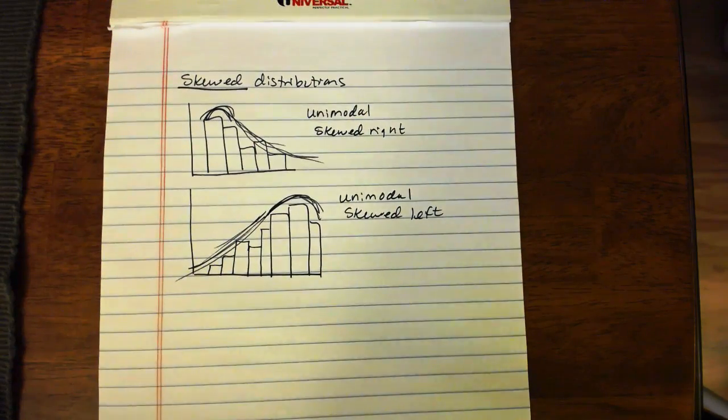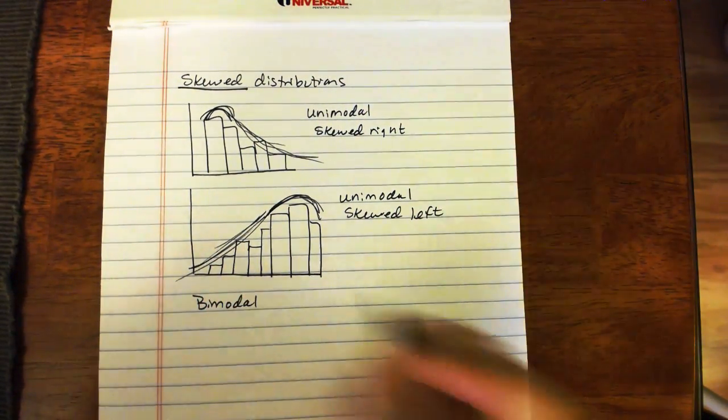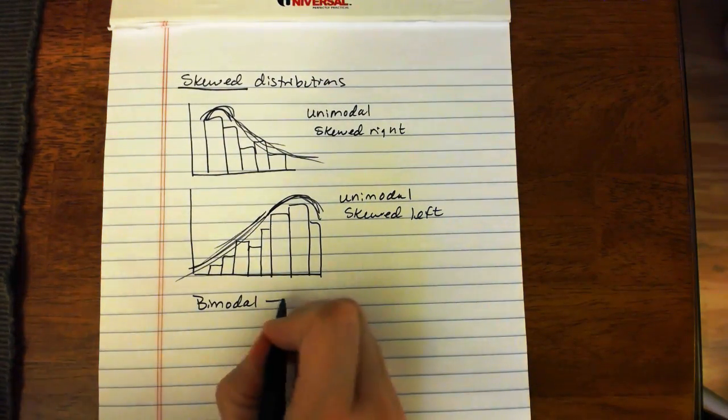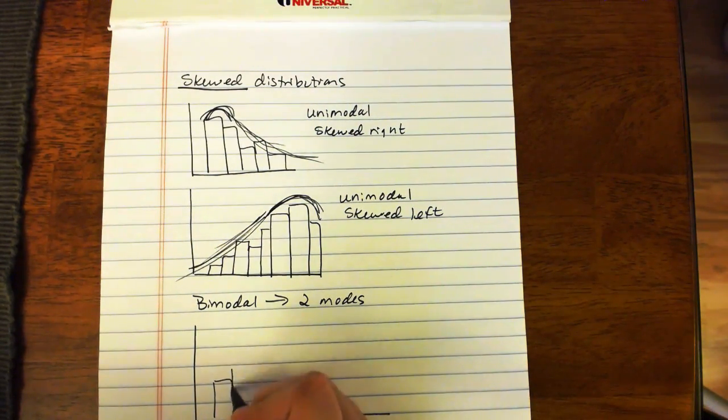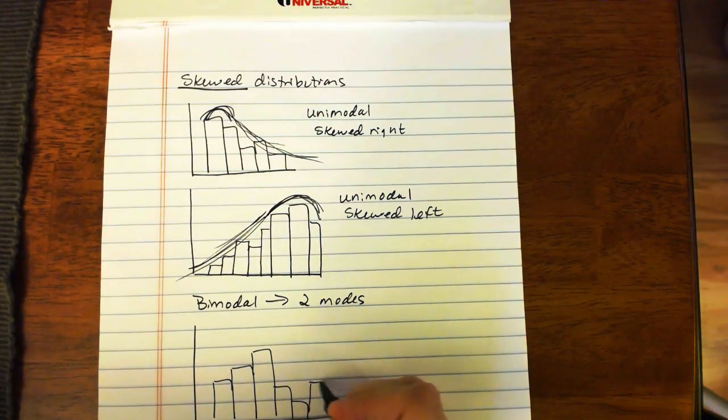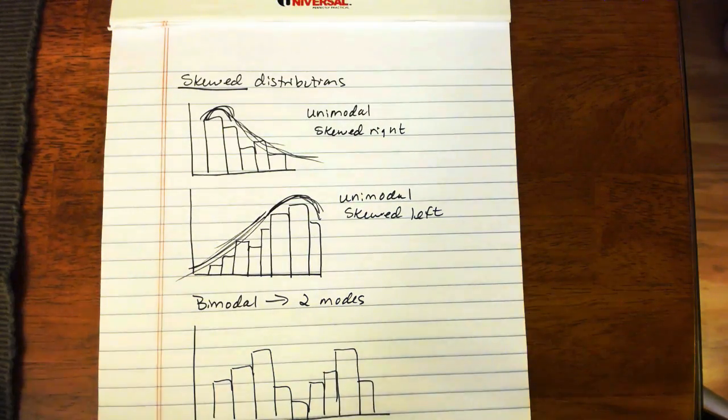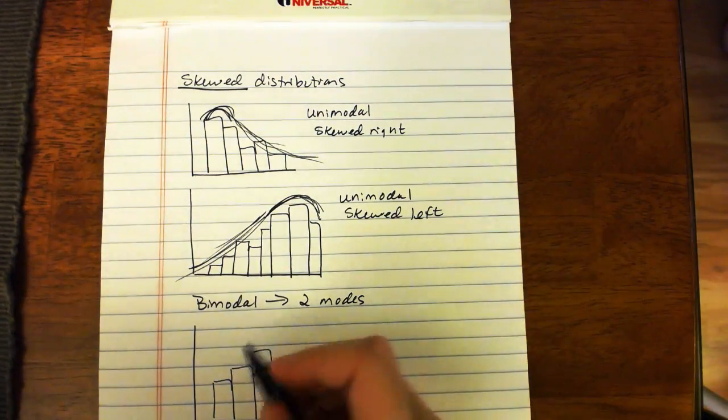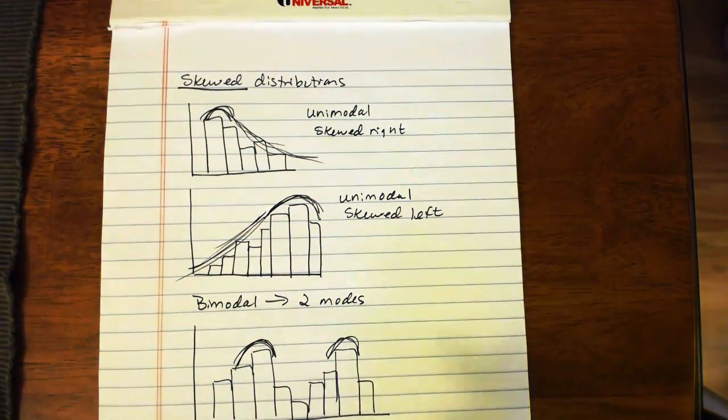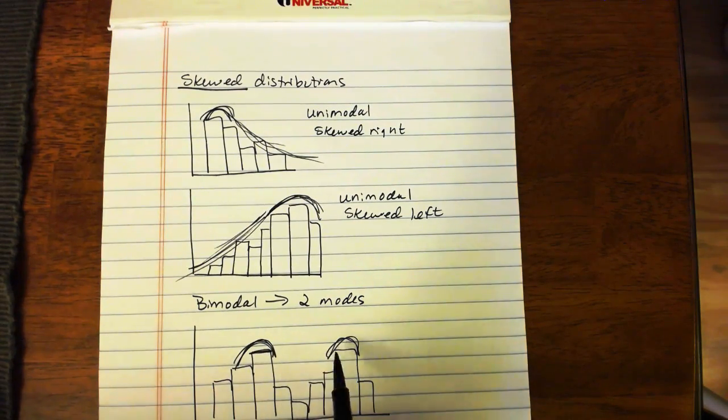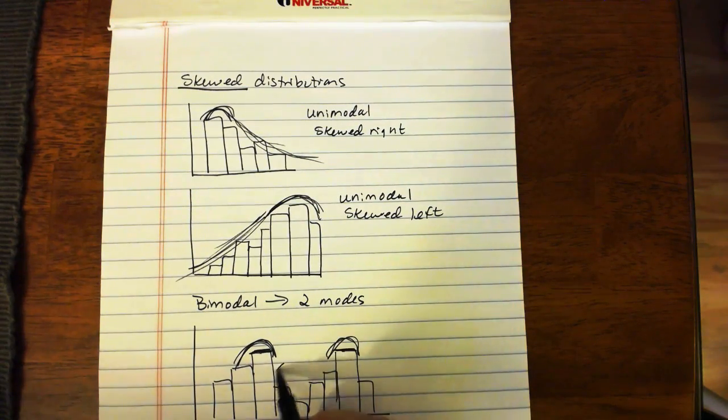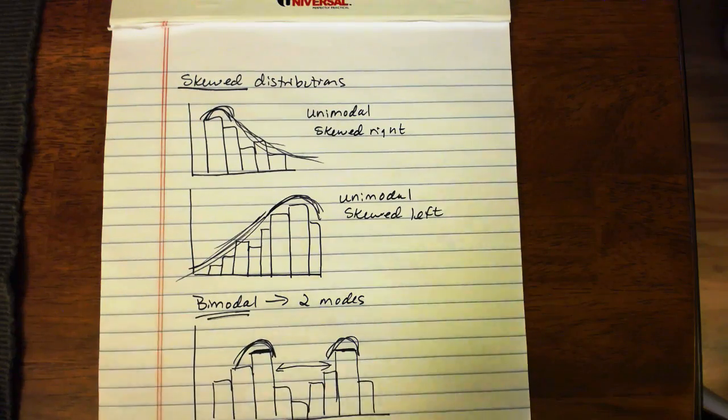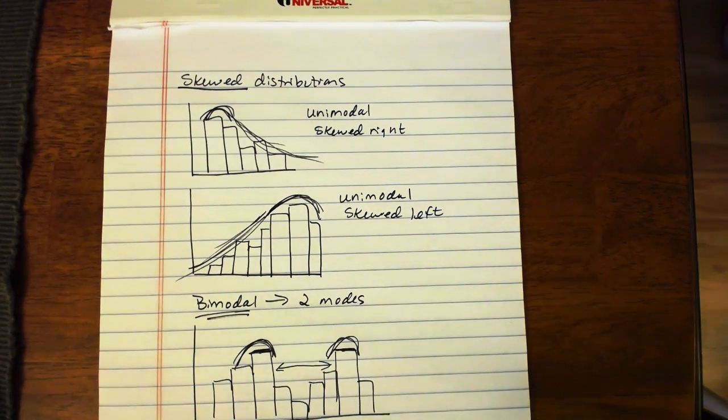And then the last type of distribution shape that you might run into is a bimodal distribution. Or you can have trimodal, multimodal. But basically, a bimodal means that there's two modes. So if we had a distribution that looked something like this. Here, there's not just one main hump of data. There's kind of a main hump over here and there's another main hump over here. And the key is that those main humps, the tallest bars, are roughly equivalent to one another. They don't have to be at exactly the same height. But if this one were way down here, if all the rest of this data were down here, that would not count as bimodal. They have to be roughly the same height and they have to be separated by some distance. And that's what qualifies that to be a bimodal distribution. There are two main humps of the data.